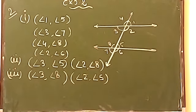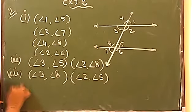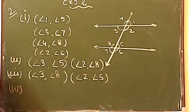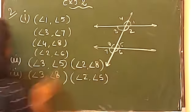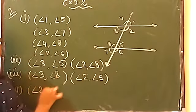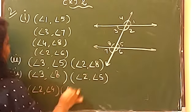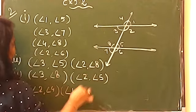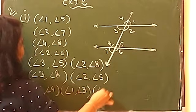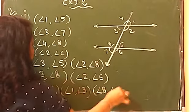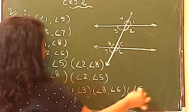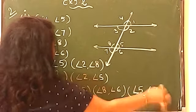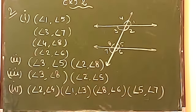Fourth: vertically opposite angles — we did this yesterday. Vertically opposite angle pairs are: 2 with 4, 1 with 3, 8 with 6, and 5 with 7. All these pairs are of vertically opposite angles.